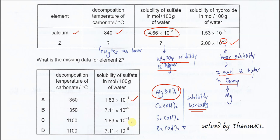Now the decomposition temperature: for calcium it's 840. Magnesium carbonate has lower decomposition temperature because magnesium has higher charge density and can polarize the carbonate more, so it decomposes easier. The decomposition temperature of magnesium carbonate is much lower than calcium carbonate - easier to decompose at lower temperature. Lower temperature means 350, so the answer is A. That's all, thank you.